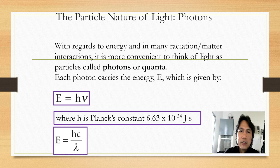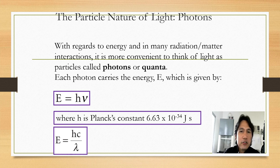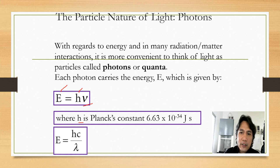The particle nature of light — the photon. With regards to energy and radiation-matter interaction, it is more convenient to think of light as a particle, or photon. Each photon carries energy given by the formula E = hν, where h is the Planck constant, with a value of 6.63 times 10 to the negative 34 joule-seconds, and ν is the symbol for frequency. Combining this, we get the energy of a photon as E = hC/λ.